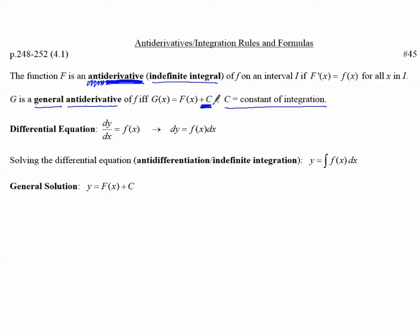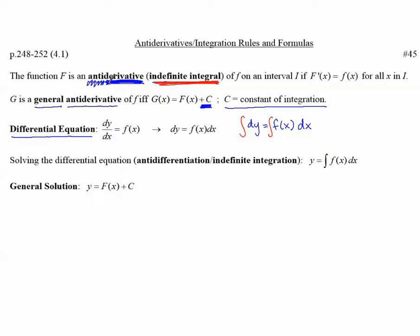The general anti-derivative is the anti-derivative plus a constant, because the derivative of that constant will always be zero. A differential equation is an equation that involves derivatives, like dy/dx equals f of x. We can also write this in differential form by multiplying both sides by dx to get dy equals f of x dx. Taking the indefinite integral of both sides means we are computing the anti-derivative.